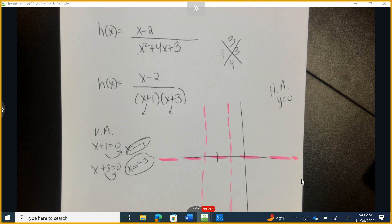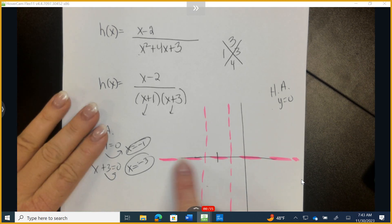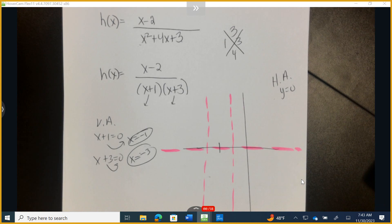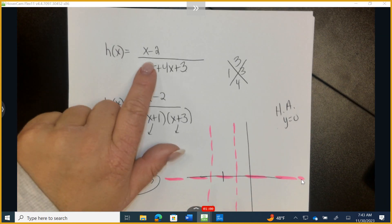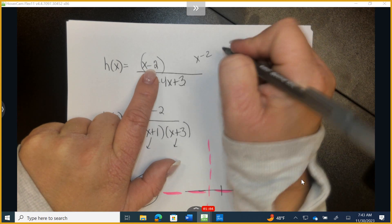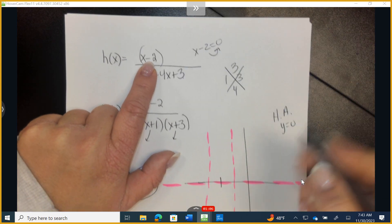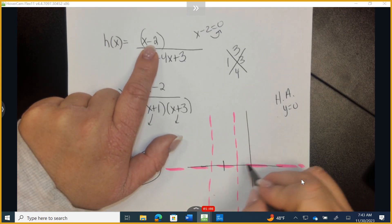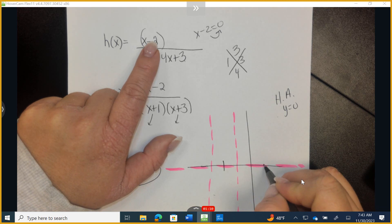Remember our function can pass or touch through horizontal asymptotes. It will never cross or touch a vertical. So I can go up to the very top, x-2. If there's a variable on top, set it equal to 0. And I have x equals 2. 1, 2. Does that look about right, kiddos?